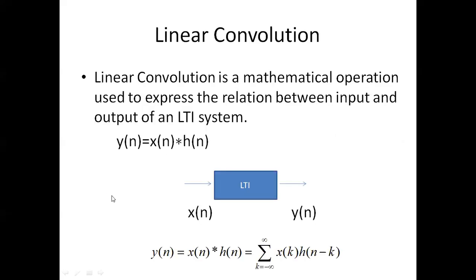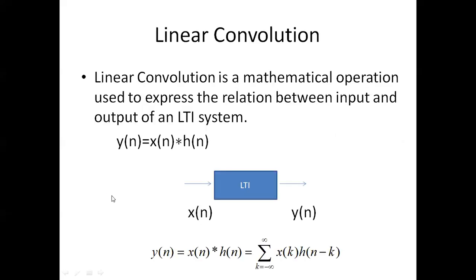The convolution is the mathematical way of combining two signals to form a third one. The convolution is used in filtering, correlation, compression, and in many other applications. The linear convolution is the mathematical operation used to express the relation between the input and the output of an LTI system.